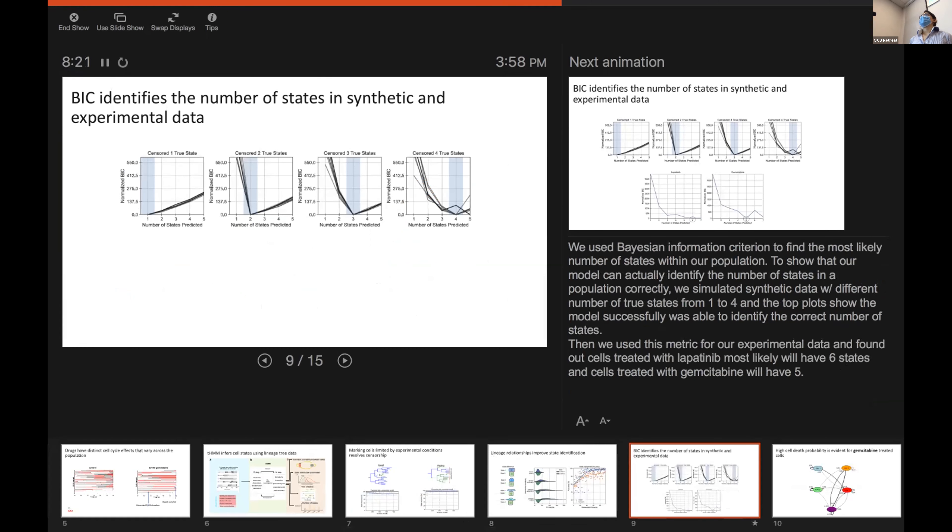So, we used Bayesian information criterion in order to find out the most likely number of states. To show that our model is actually capable of identifying the true number of states, we created four synthetic populations from one true state to four true states. And in all of them, we can see that our model is actually picking the correct number of states.